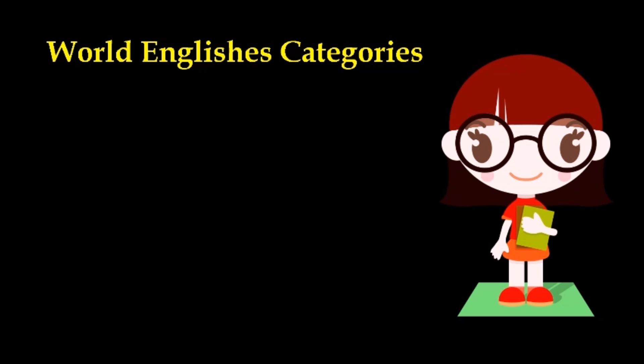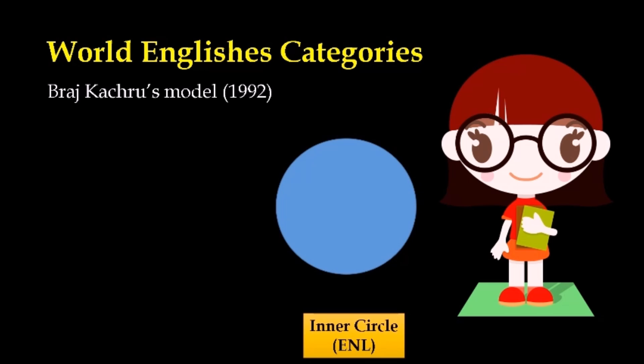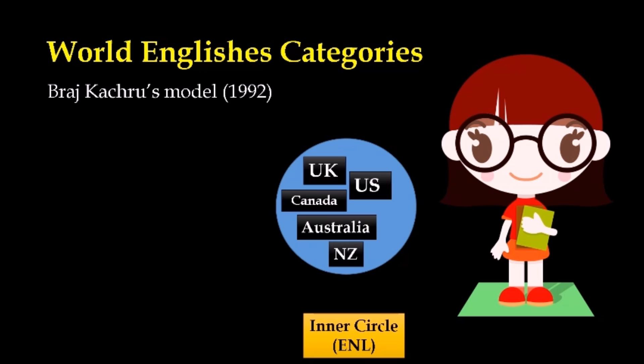In 1992, Raj Kachru proposed three circles to categorise English. The first circle, the smallest one, is called the inner circle. It refers to English as the primary language or the mother tongue. The countries which belong to the inner circle are the UK, US, Canada, Australia and New Zealand.